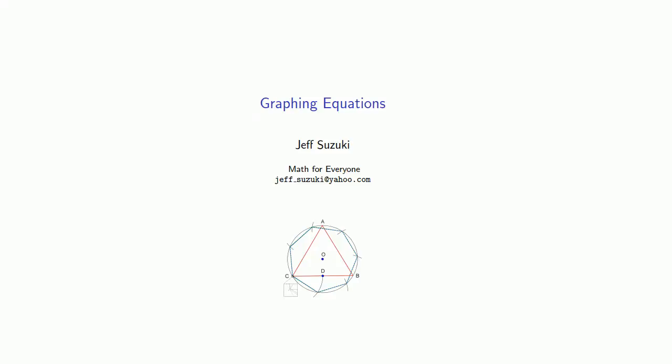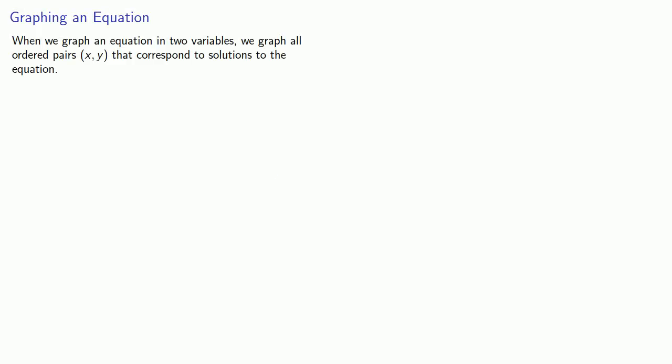A picture is worth a thousand words. An equation is essentially a bunch of words. A picture of that equation is a graph. When we graph an equation in two variables, we graph all ordered pairs (x, y) that correspond to solutions to the equation.